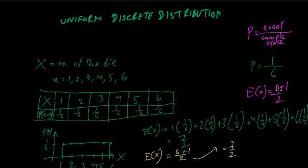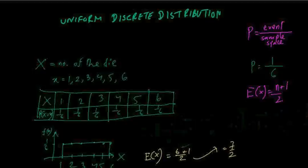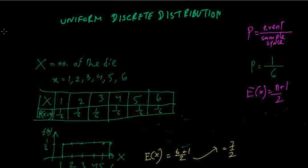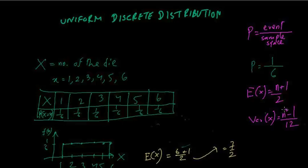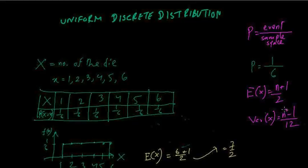Now let's look at the variance. When we talk about variance for a uniform discrete distribution, the formula is very simple: (n²-1)/12. That's it. You don't have to worry about the long variance formula used for general distributions — just plug in and you'll get the variance.